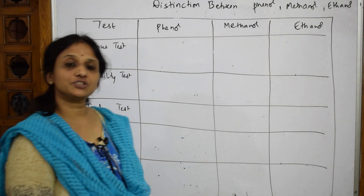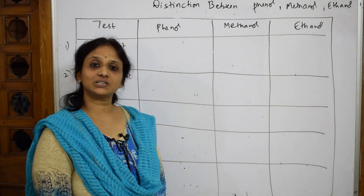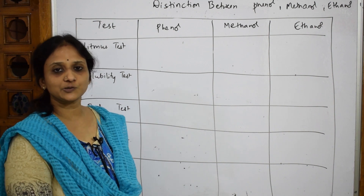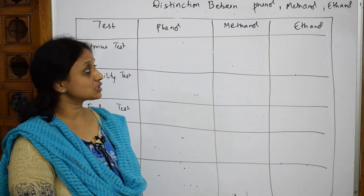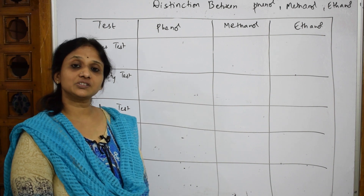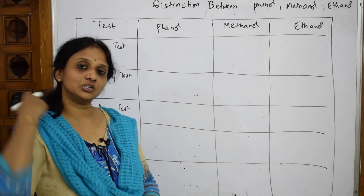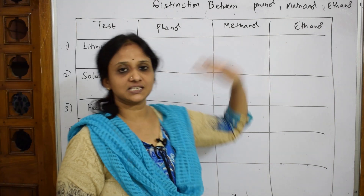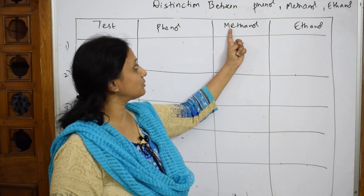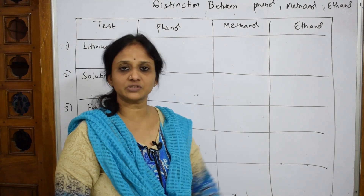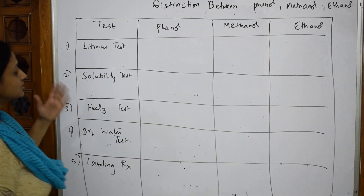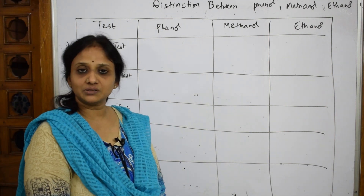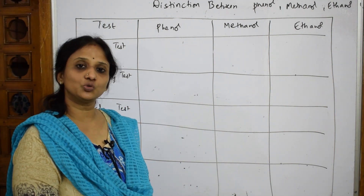Let's come back after your halo alkenes and haloalkanes chapter and see further. Let's start with differentiation and distinguishing tests between phenols, methanol, and ethanol. Phenol is aromatic, while methanol has one carbon atom and ethanol has two carbon atoms with an alcohol group. The test we are going to do — suppose in the exam if you don't remember the reaction, just know how to write it in the paper.